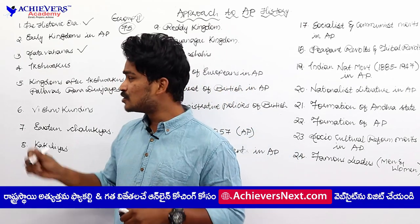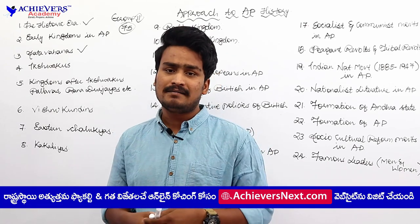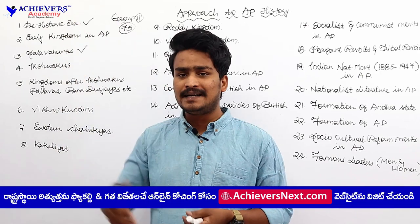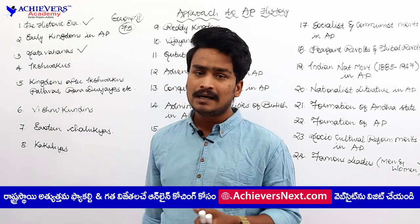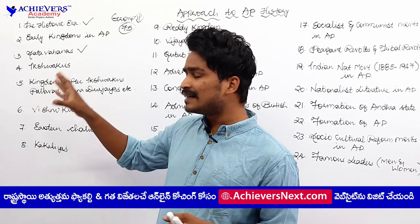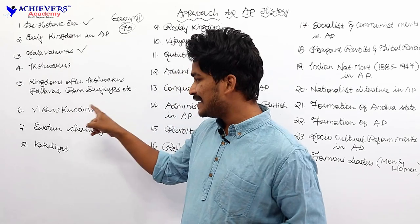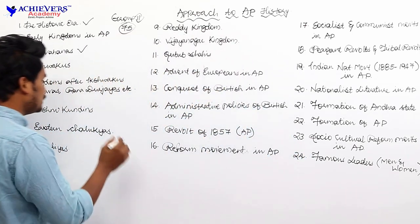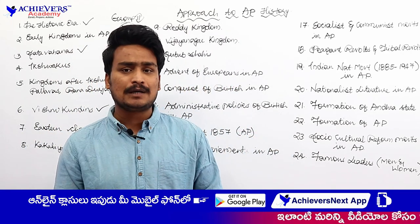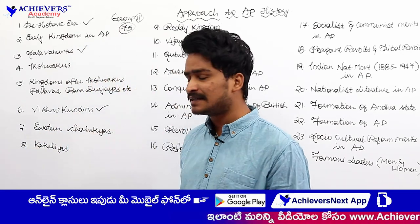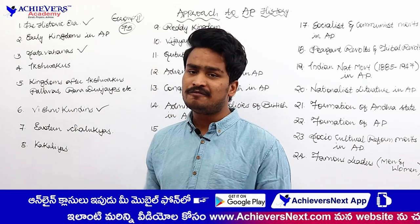We shall discuss about these smaller kingdoms. Regarding Pallavas here, we are referring to early Pallavas. Greater Pallavas would be a part of Indian history, but regarding AP history, we shall discuss about early Pallavas. After the various smaller kingdoms following Ikshvakus, there comes another major dynasty — that is Vishnu Kundins. Near Rajamandri, the Undavalli caves are constructed by Vishnu Kundins. We should learn the history of Vishnu Kundins.